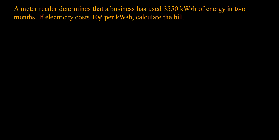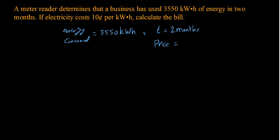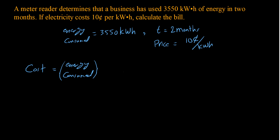So let's put the details. The energy consumed is 3550 kilowatt hours. The time is two months — let's see if we're going to use that or not. And the price is 10 cents per kilowatt hour. Now to calculate the cost, I need the energy consumed multiplied by the price per kilowatt hour.